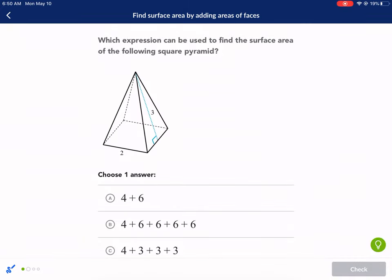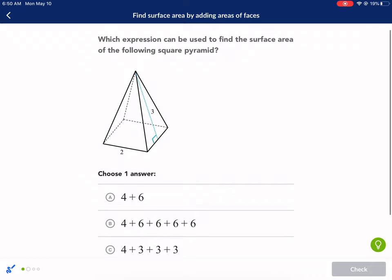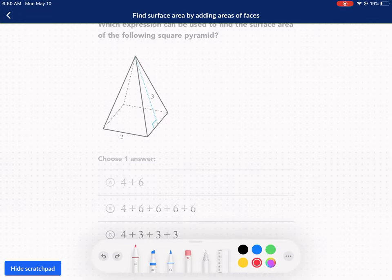All right, next question. Here we have a pyramid. Which expression can be used to find the surface area of the following square pyramid? Pyramids are a little bit more tricky, but not that bad. We have a square pyramid. It's a big clue here. It's telling us it's a square pyramid, so we know this is going to be two by two. Well, for a square, we just multiply. It's the same as a rectangle. That's going to be area four. But notice how there's only one square.